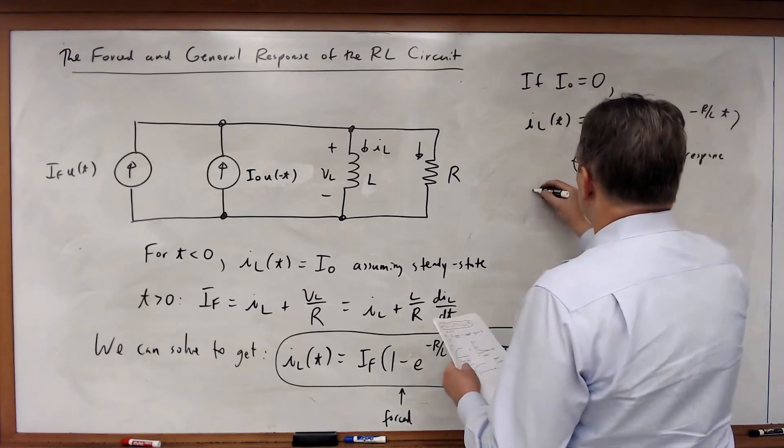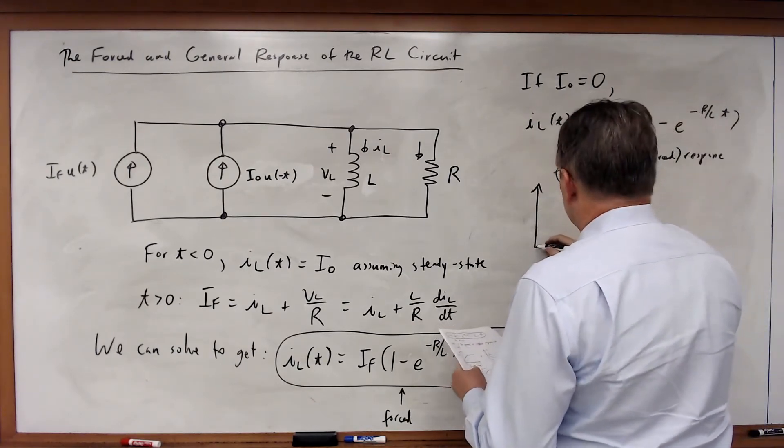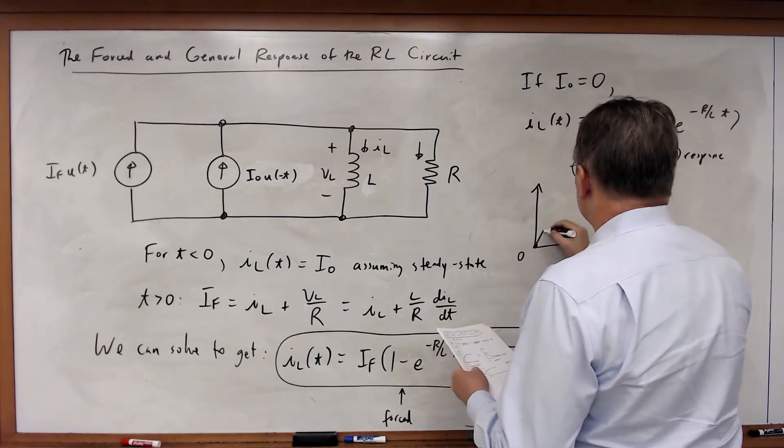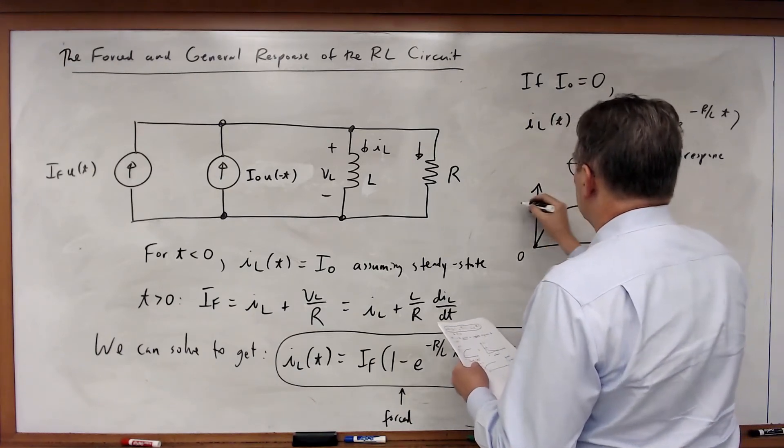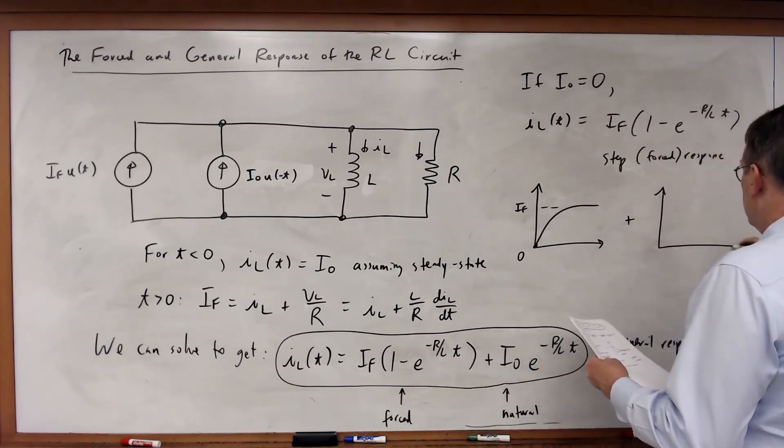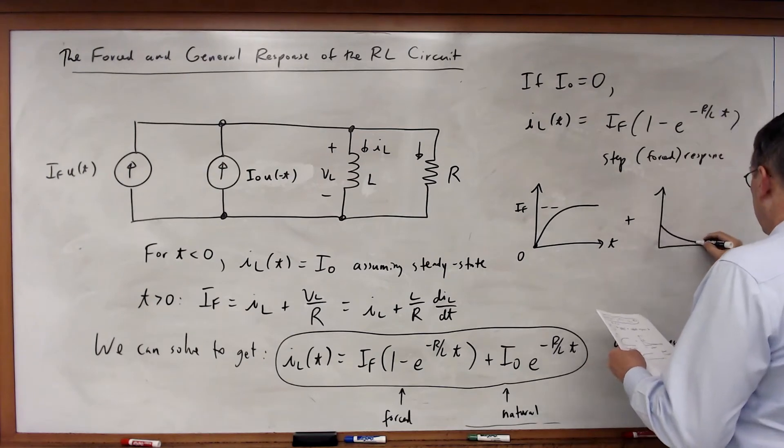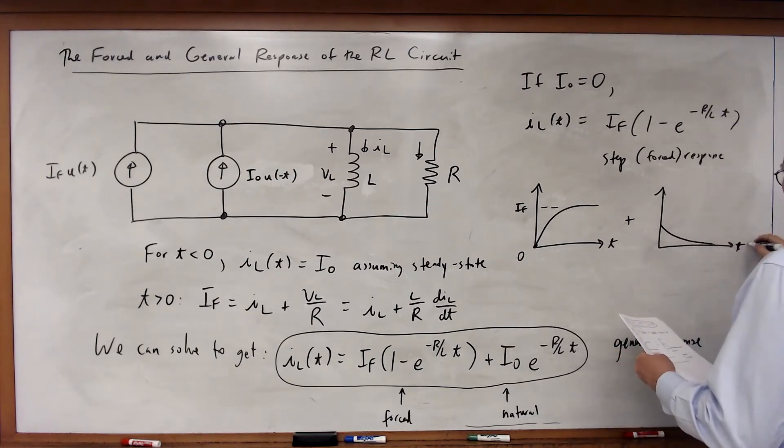And therefore, we see the same kind of behavior we had before, where we start off at some 0 initial condition and converge to a final response. We add that to a situation where we start off with an initial condition and we go to a 0 final response.